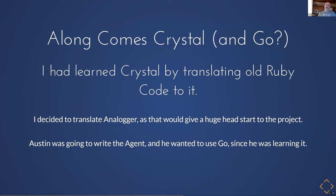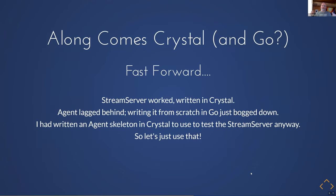Austin volunteered to write the agent. Because he was learning Go and Go ticked a lot of the same boxes for execution speed and RAM usage, he started implementing the agent in Go. Fast forward a bit — I had a working stream server written in Crystal. The agent had lagged behind; implementing it from scratch in Go just got bogged down. I had already written a Crystal skeleton agent to test the stream server, so we decided to just use that. We went forward with it, so now two of the platform's components were both implemented in Crystal.